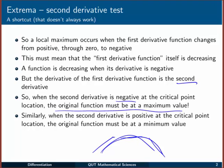Similarly, when the second derivative is positive at the critical point, the original function must be at a minimum value.